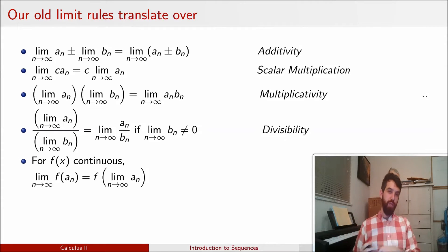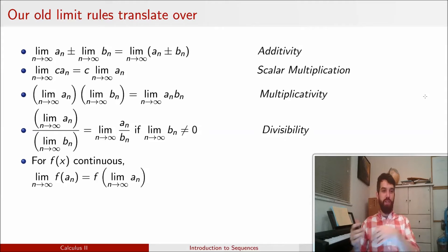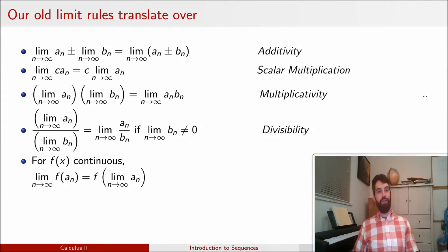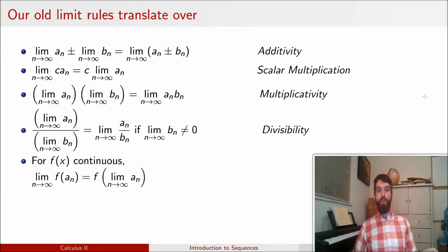Finally, one of our most important rules: if f is a continuous function, you can take the limit sign and put it inside the function. The limit of f(a_n) — say sine — is just sine of the limit of a_n. Every one of these rules matches a rule we once had for limits of functions; we're just now translating them into limits of sequences.